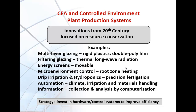Finally, information: computerization allowed the collection, storage, and analysis of data, which began to give the grower a better understanding of how the system worked and how it might be improved. Essentially, the strategy was to invest in hardware and control systems to improve overall resource use efficiency.